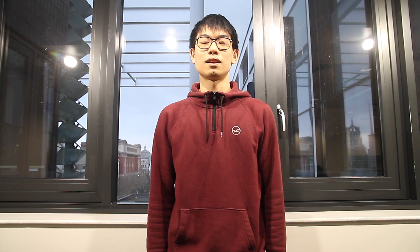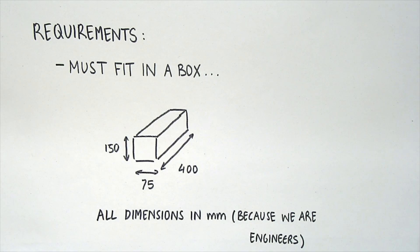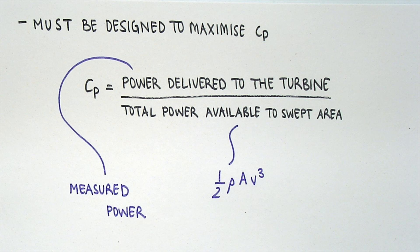In conclusion, our blade met the design specifications of fitting into the box with the prescribed dimensions. The CP value of the first blade exceeded the Betz limit, likely due to blockage effects of the wind tunnel. The second blade's CP value was 0.06 below the Betz limit, and TSR prediction was poor, particularly for the second blade.